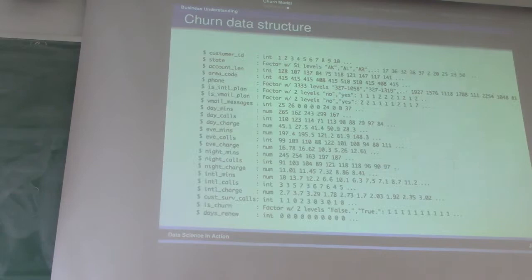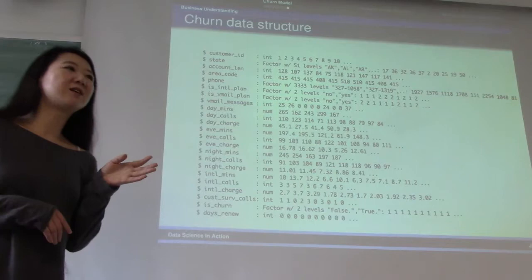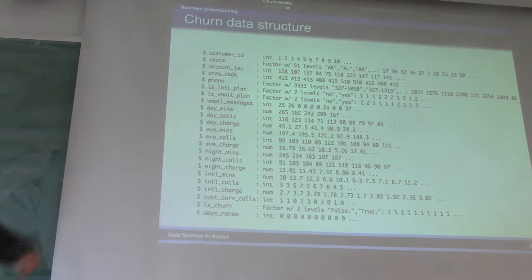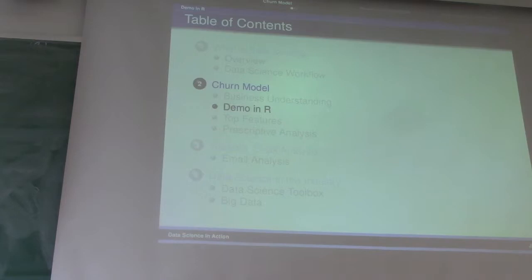These data, in the ideal world, they're all having a unique column called customer ID, so we can patch them together, merge them into churn data. If you look at the churn data, we have all the columns we just looked at, all centered around the customer ID. Next, we're going to look at the data in R.